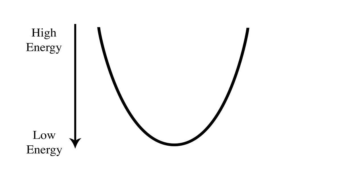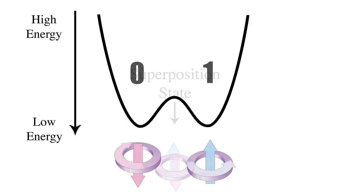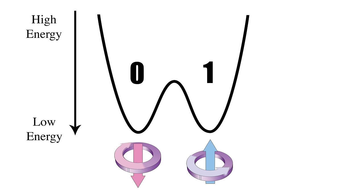To begin with there's just one valley and the lowest point corresponds with the superposition state of the qubit. When quantum annealing is run a barrier is raised and this turns the energy diagram into what's known as a double well potential.